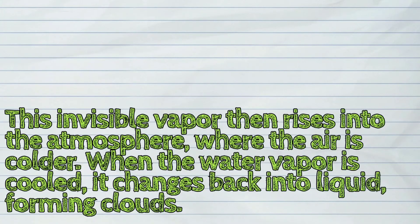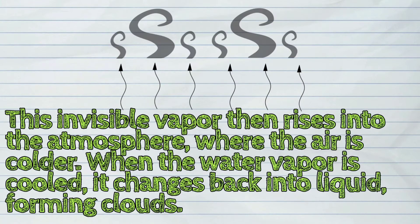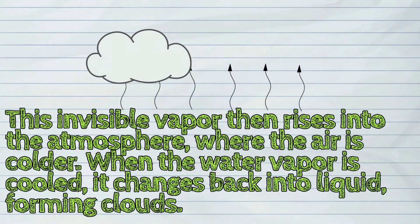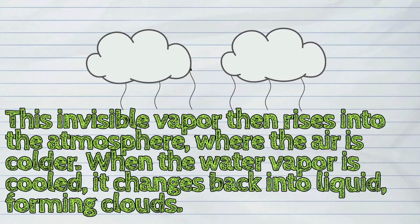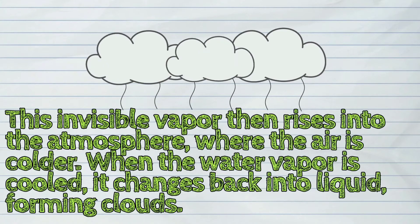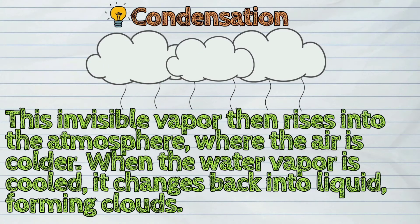This invisible vapor then rises into the atmosphere, where the air is colder. When the water vapor is cooled, it changes back into liquid, forming clouds. This is called condensation.